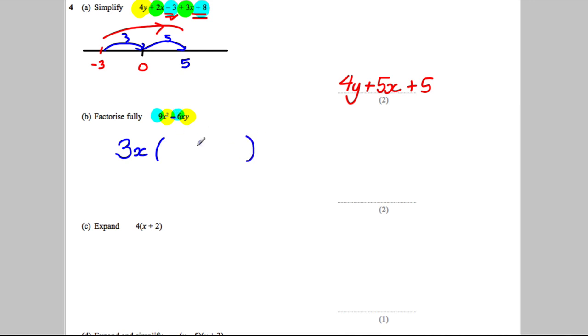Then you open up your bracket and put a subtract in for that subtract there. Now, what needs to go here when you multiply it by 3x? You get 9x squared. Well, you need another 3 because 3 times 3 is 9, and you need another x because x multiplied by x is x squared. What needs to go here to get 6xy? Well, you need a 2 because 2 multiplied by 3 gives you 6. You've got an x, so you just need a y there. So the answer would be 3x(3x - 2y).